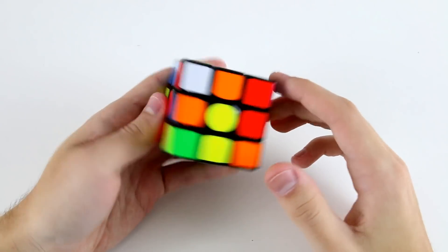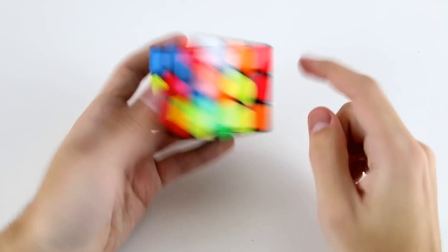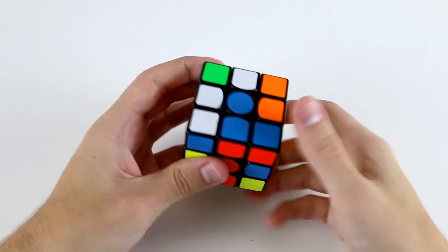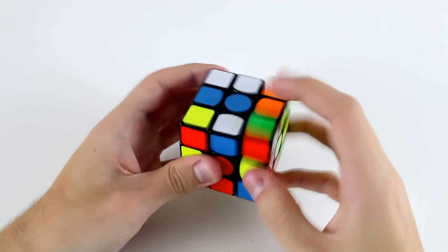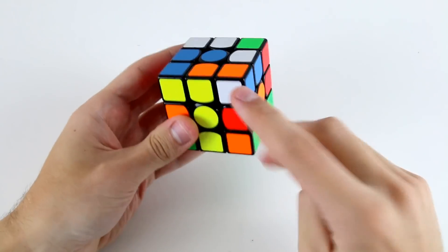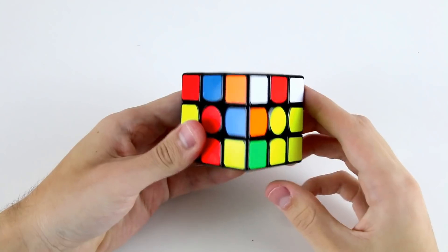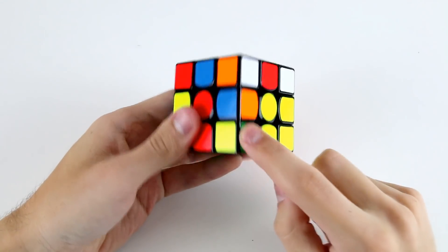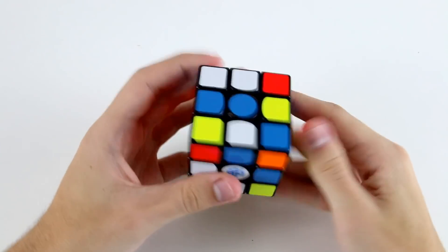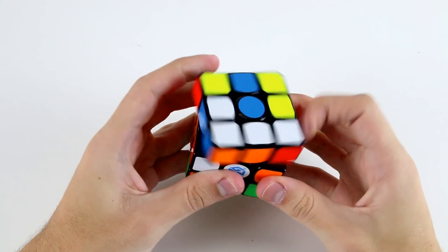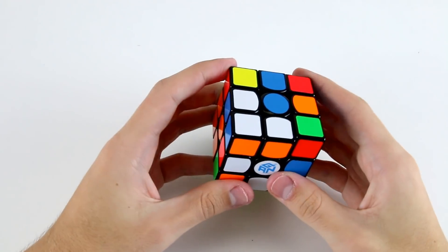The first F2L pair that I see that I can do without a rotation is this edge and this corner down here. I'll do that a bit more slowly. So these two R prime U R and then insert it and as I was doing that I noticed I had this F2L pair down here and this edge is here so I can insert that one as well in the same manner.